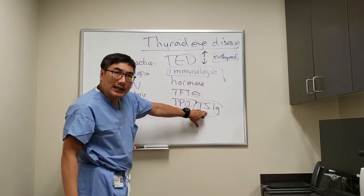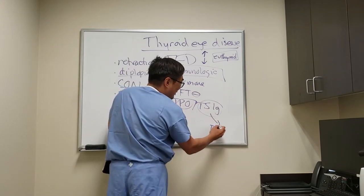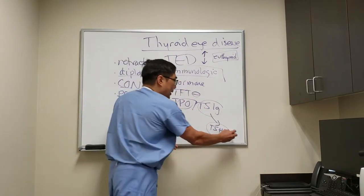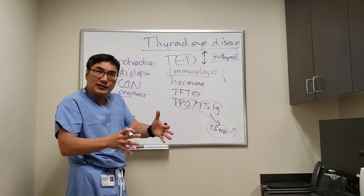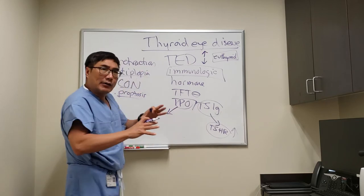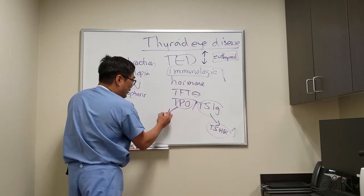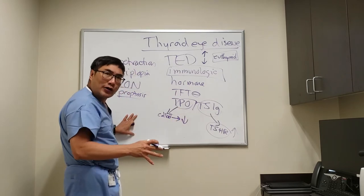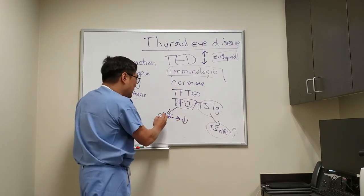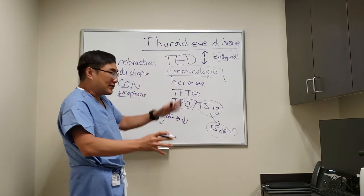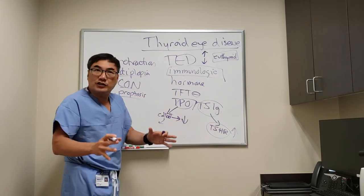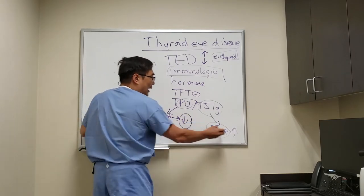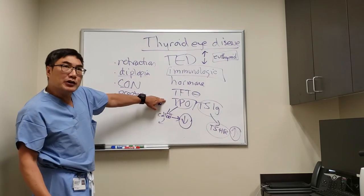If you have the thyroid stimulating immunoglobulin, that's going to bind onto the TSH receptor on the thyroid gland and cause high thyroid — that disease is called Graves' disease. If it's the TPO antibody — the thyroid peroxidase antibody — it's going to damage the thyroid colloid and usually causes low thyroid, which is Hashimoto's. But sometimes the colloid releases thyroid hormone transiently, and that can cause thyrotoxicosis even though you have Hashimoto's — we call that Hashitoxicosis.